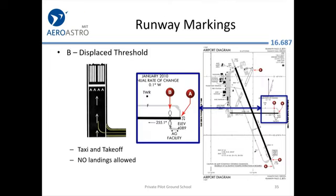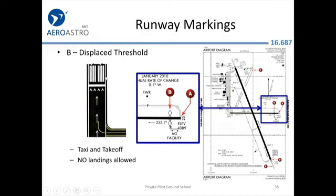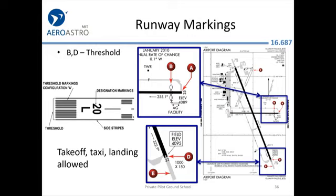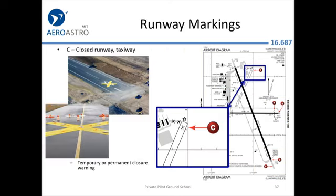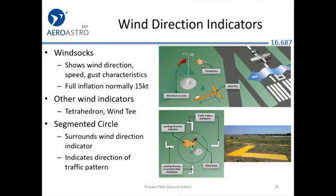There are many runway markings. The arrows indicate a displaced threshold — you can taxi and take off on that space, but you're not supposed to land there; you must cross the big solid white line before landing. A large X on a runway means it's closed — don't land there. All of these are defined in the PHAK — the Pilot's Handbook of Aeronautical Knowledge.